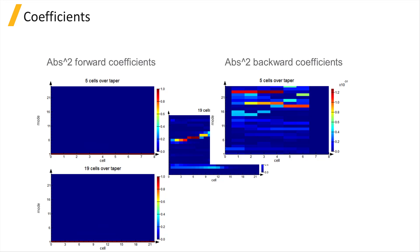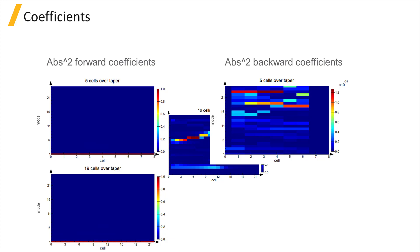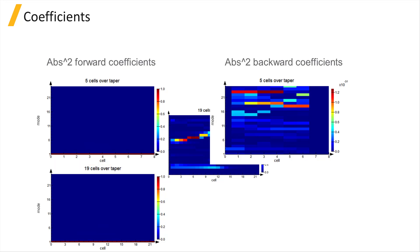For the case of this taper, looking at the absolute value of the forward coefficients to plot the fraction of power traveling in each mode in the forward x direction, we can see that the power is carried by the fundamental mode as the value for mode 1 is close to 1, and the value for the other modes is negligible over the full length of the device, so this taper is adiabatic. Looking at the backward propagating coefficients, we can see from the color bar scale that the reflected power is negligible.